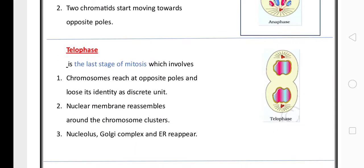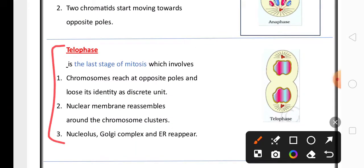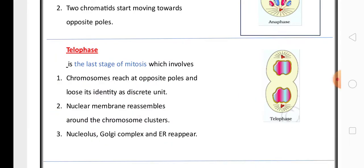The last phase is telophase, also important for two marks. In telophase, chromosomes reach the opposite poles of the cell and form discrete units. Nuclear membrane, nucleolus, and Golgi complex start reappearing in this phase.